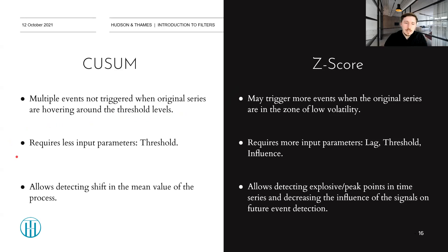The CUSUM filter requires less input parameters being only the threshold, or maybe if you decide to use a symmetric or asymmetric CUSUM filter. The Z-score requires more input parameters: lag, threshold, and influence. The CUSUM filter is mainly designed to detect shifts in the mean value of the process. And the Z-score is mainly designed to detect explosive or peak points in the series, as well as at the same time decreasing the influence of such signals or outliers on future event detection.